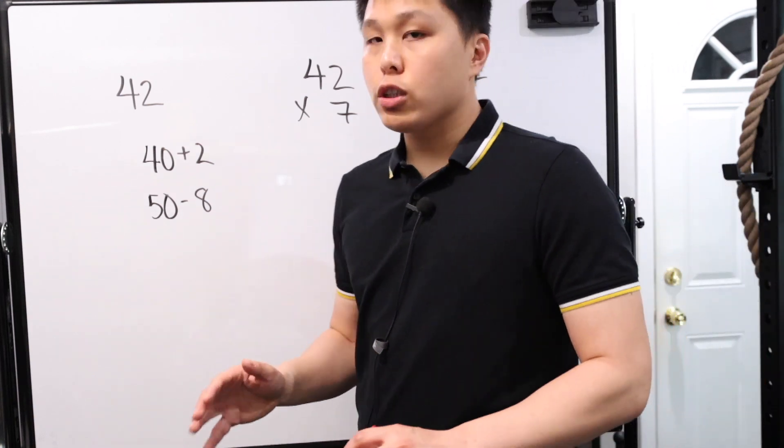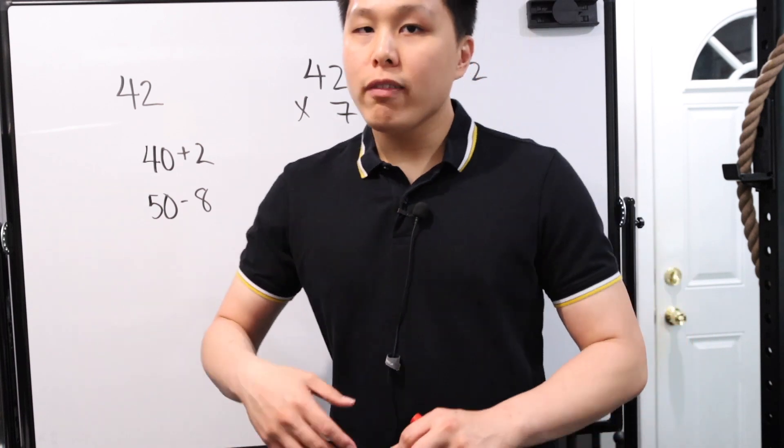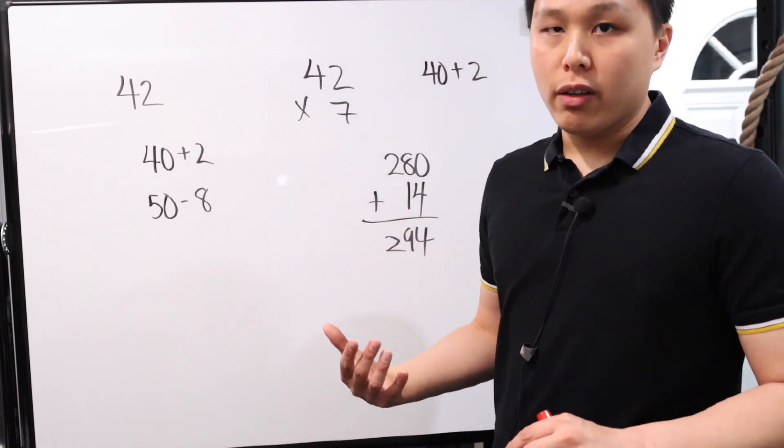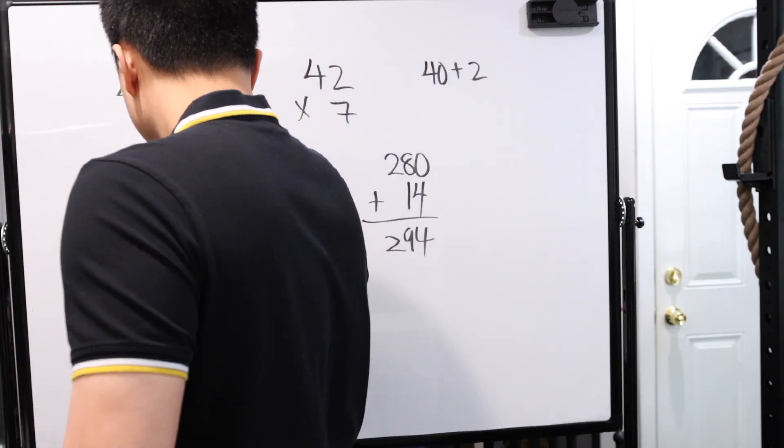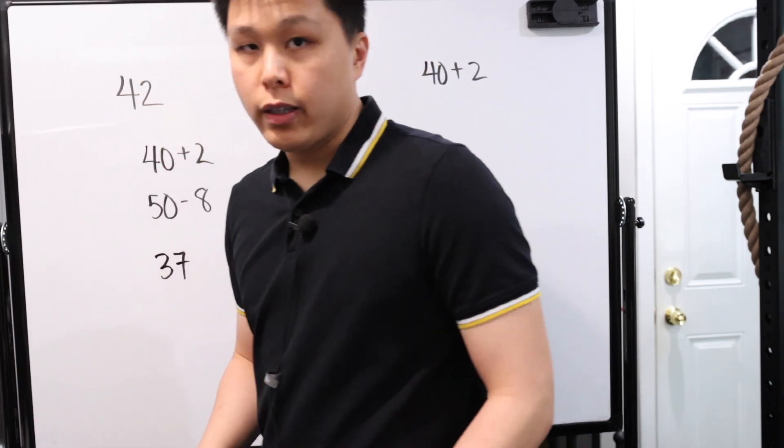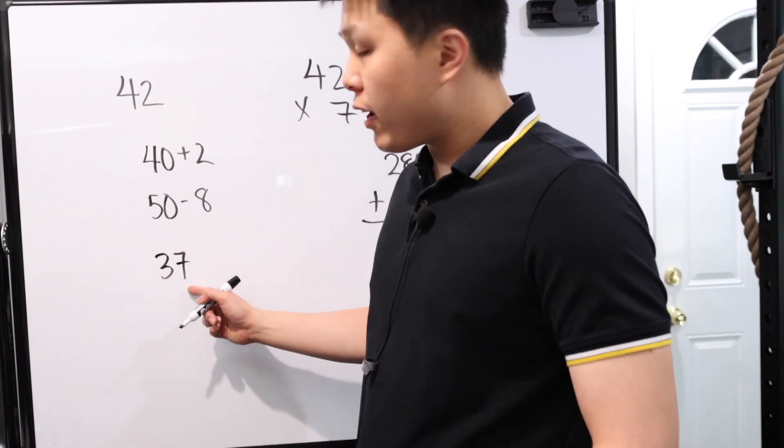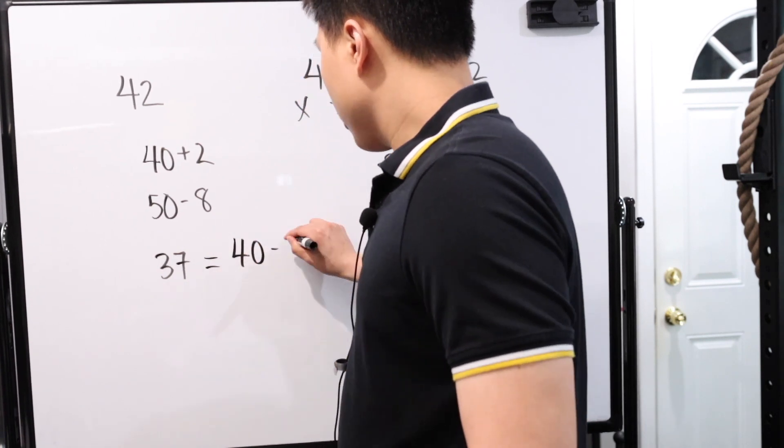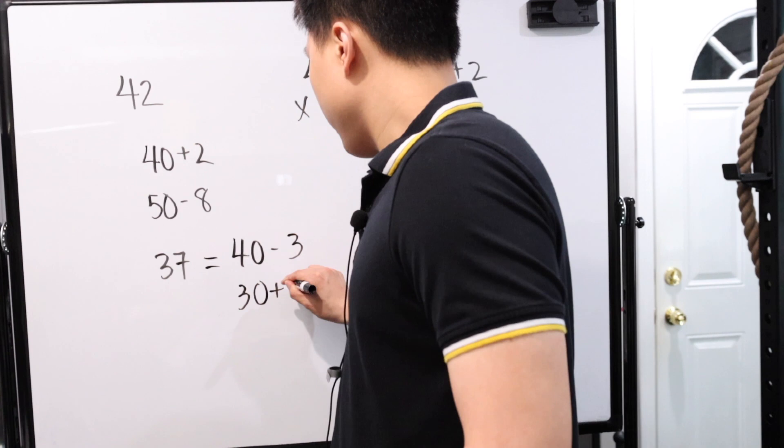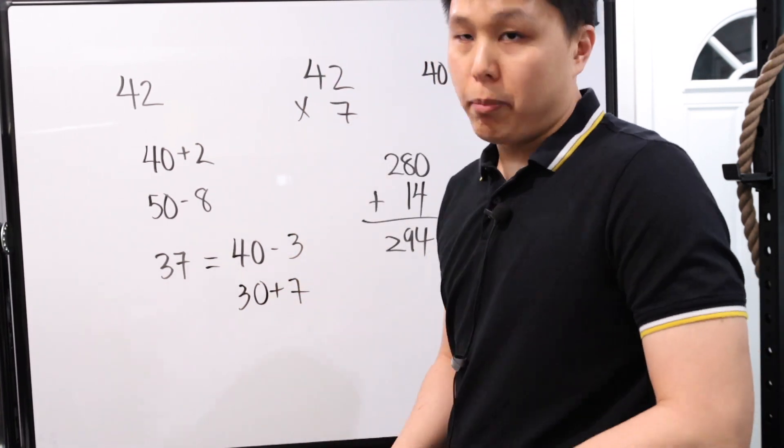But if you break it down, for example, to 40 plus 2, all of a sudden you can solve it very quickly. Seven times 40, that's almost like seven times four, which you should be fairly good with and then add a zero. What's that? That's 280. And then you can add 14, which hopefully if you watch the other video you can add it very quickly. And that right there is 294. That speeds up your computation twofold, if not more.